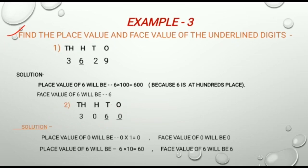First we will find the place value and face value of 0. So the place value of 0 will be 0 multiplied by 1 is equal to 0. And the face value of 0 will be 0.